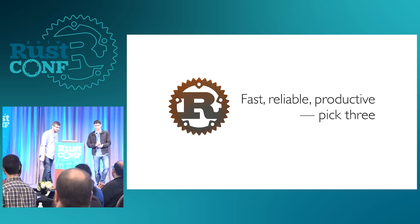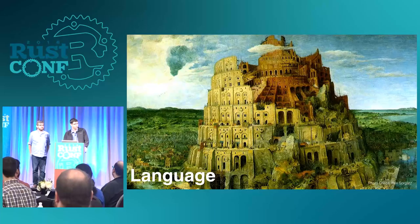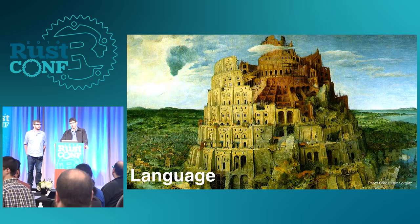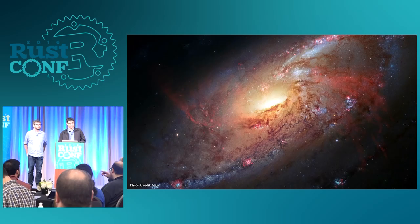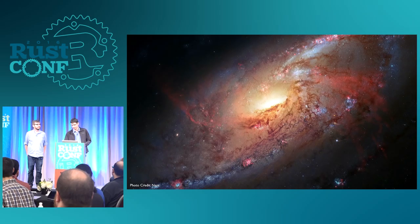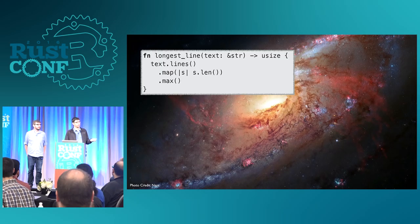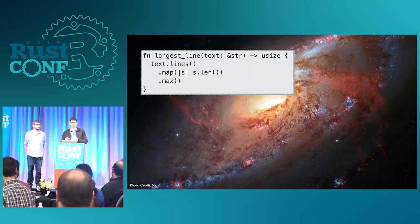When it comes to the language itself, in terms of being productive while also having code that runs fast and is reliable, we've done a pretty good job. What I love about Rust is this feeling of galactic power — I can write an iterator that takes a string, breaks it into lines, finds the maximum length, and not only does it look pretty, but in other languages it would make an object for every line. In Rust it's as fast as C code with a pointer skipping along.